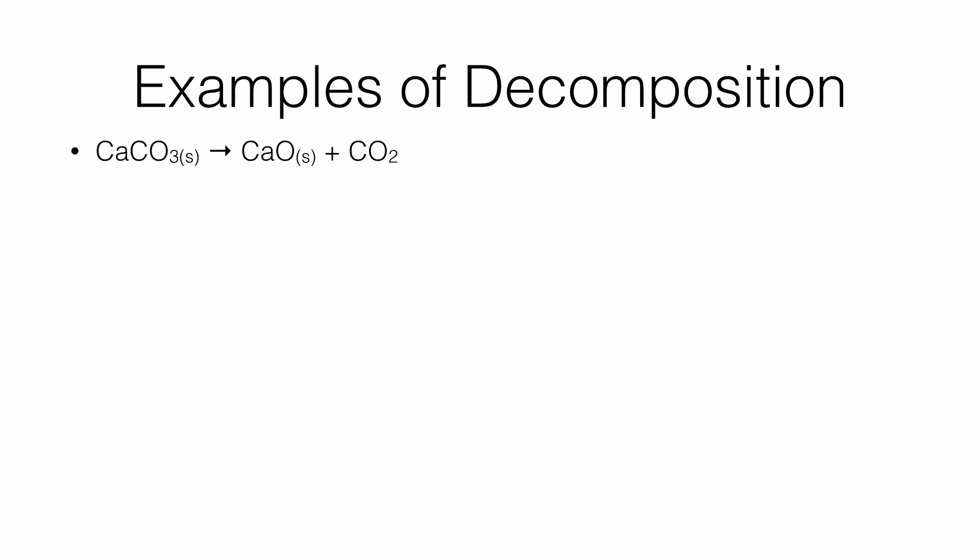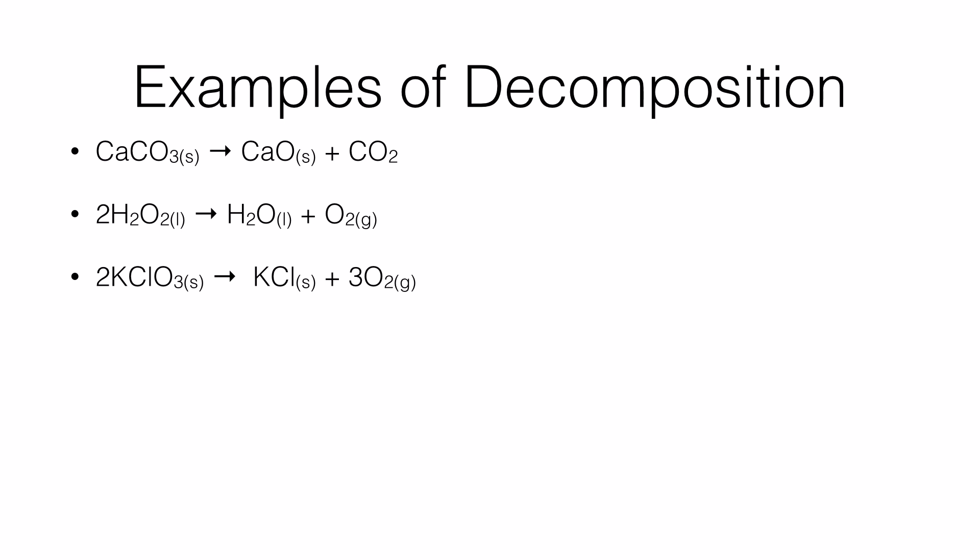Examples of decomposition reaction: the first reaction is where you heat calcium carbonate to produce calcium oxide and carbon dioxide — a single compound giving you two new compounds. Hydrogen peroxide, H2O2, will decompose to give you water and oxygen. This reaction can be enhanced by adding a catalyst like manganese dioxide. The third reaction is the decomposition of potassium chlorate, which gives you potassium chloride as a solid and oxygen gas.